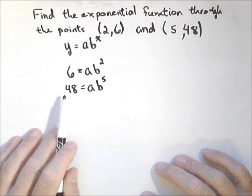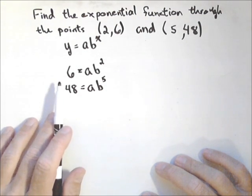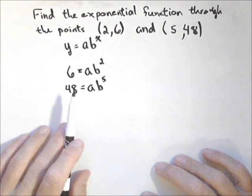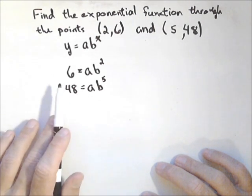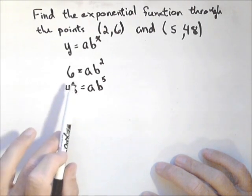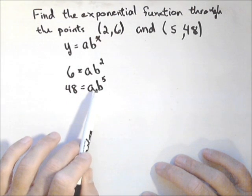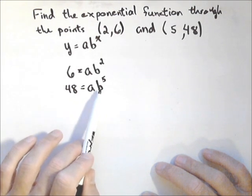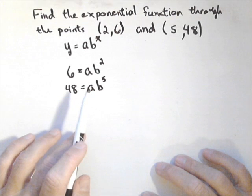It doesn't matter which one I put on top. In fact, ours might have been easier to do the other way, but that's okay. We're going to get the same answer. What we have now is we've created two equations with two unknowns, a and b. So, we can solve this via substitution or elimination.